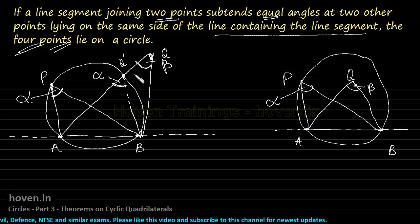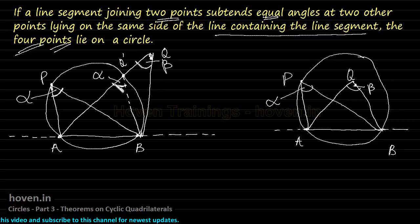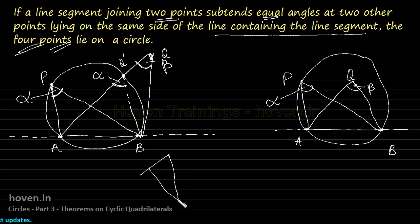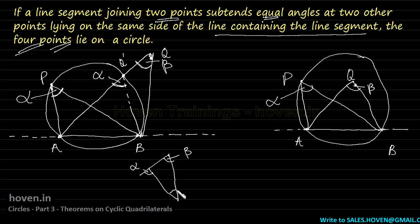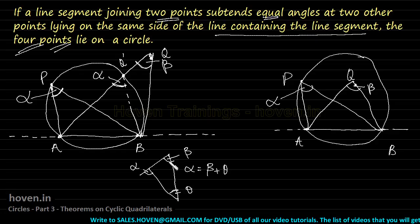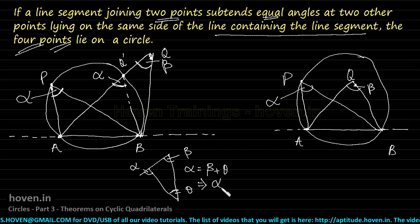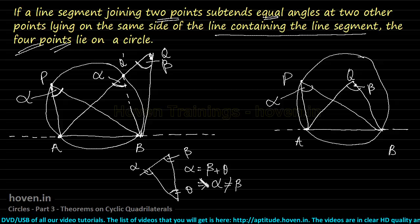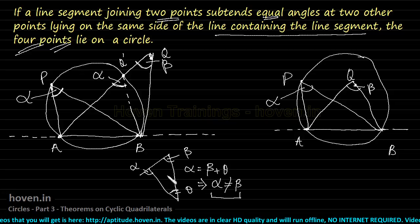Now consider triangle Q, Q', B. Alpha is the exterior angle of this triangle, beta is one interior angle, and let the other interior angle be theta. By the exterior angle theorem, alpha equals beta plus theta. This immediately implies alpha cannot equal beta, since alpha is obtained only after adding theta to beta.